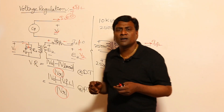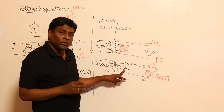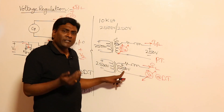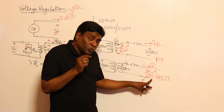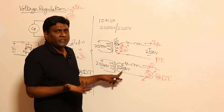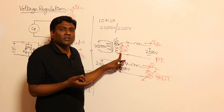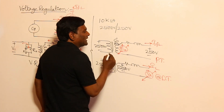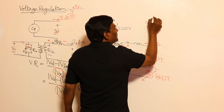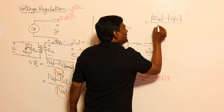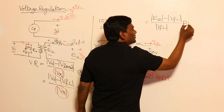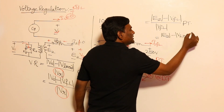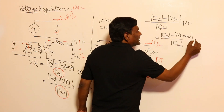For a power transformer, voltage regulation equals (E2 − V_fullload) / V_fullload × 100%. For a distribution transformer, voltage regulation equals (E2 − V2) / E2, where E2 is the no-load voltage and V2 is the any-load voltage. Because for a distribution transformer, the no-load voltage E2 is given and the rated terminal voltage varies with load.